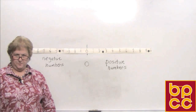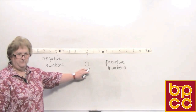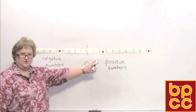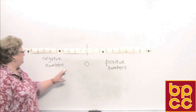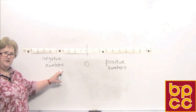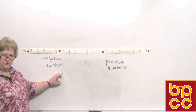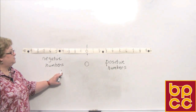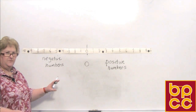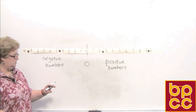Take a look at my number line here. In the center, you have zero. To the right, you have all the positive numbers. And to the left, you have all the negative numbers. Positive and negative numbers on the number line are called integers. I'd like us to do some comparing of these numbers, keeping in mind that the one to the right is always larger.